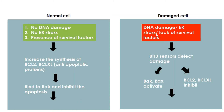In a damaged cell, there could be DNA damage, ER stress, or lack of survival factors — all acting as a death signal. This death signal is detected by the BH3 sensor proteins, which then activate the pro-apoptotic proteins and inhibit the anti-apoptotic proteins BCL2 and BCL-XL. So in a normal cell there is inhibition of pro-apoptotic and activation of anti-apoptotic proteins, but in a damaged cell the opposite occurs.